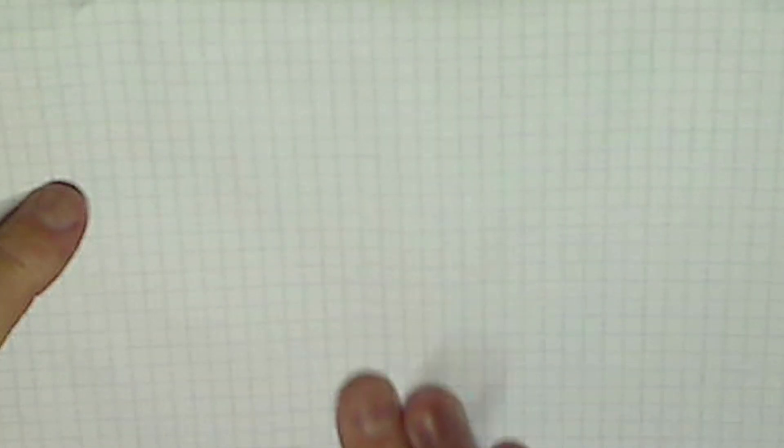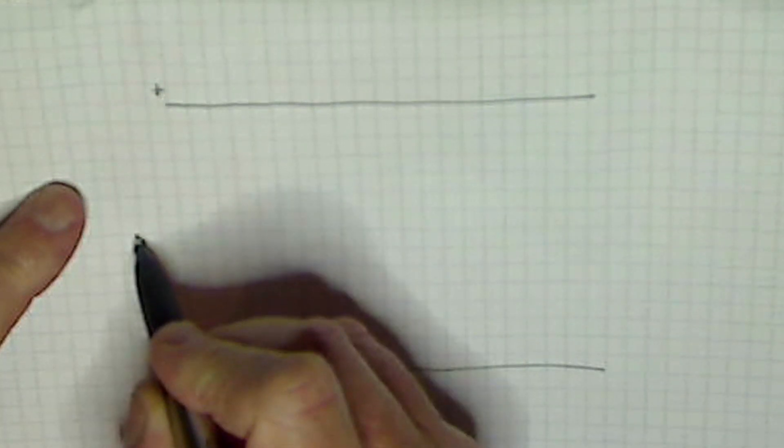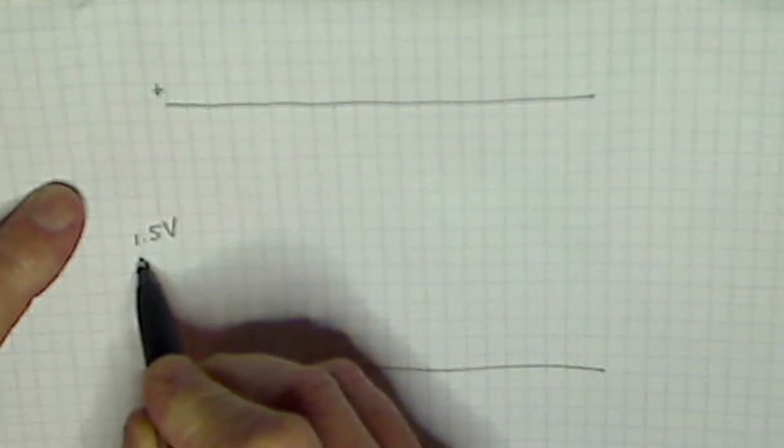Okay, I thought I'd show you what the Joule Thief really is. Let's assume this is the positive line, positive lead, and this is the negative lead of a 1.5V battery.